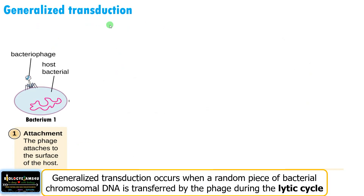Let's begin with generalized transduction. As the term suggests, generalized transduction means any random fragment of the host may be transferred by the phage. It occurs when a random piece of bacterial DNA is transferred by the phage during the lytic cycle. Remember, generalized transduction takes place during the lytic cycle.